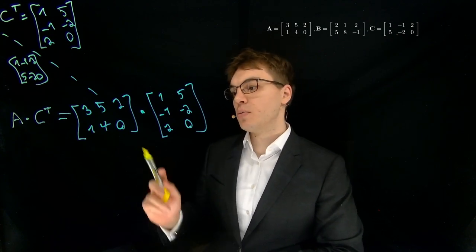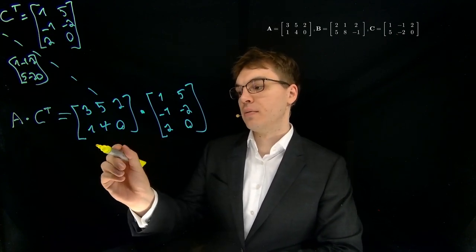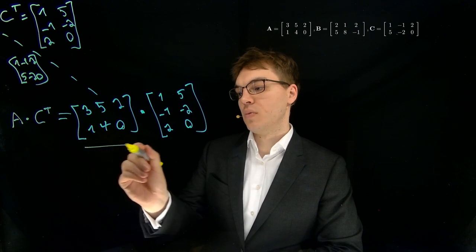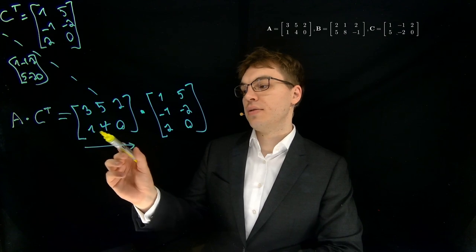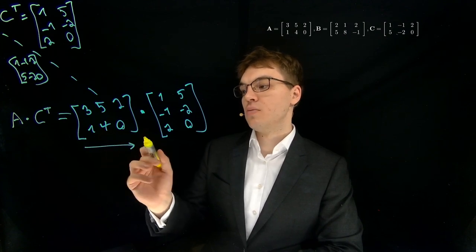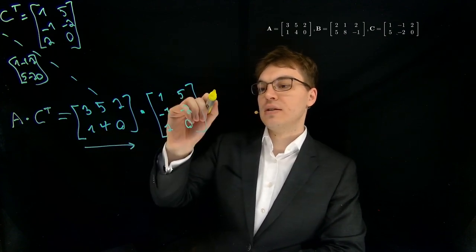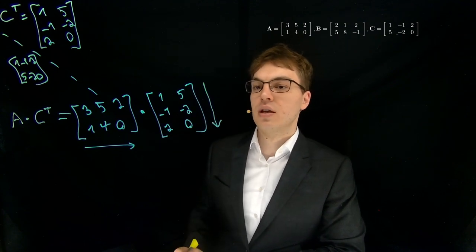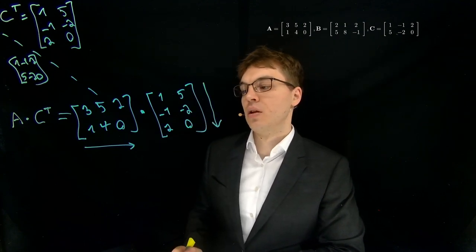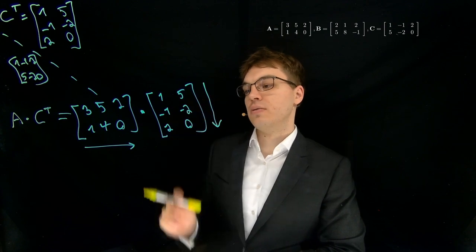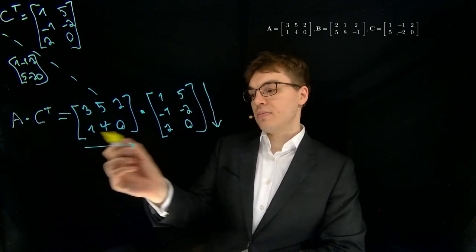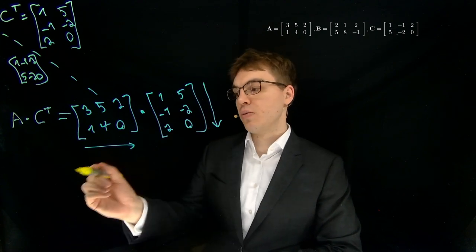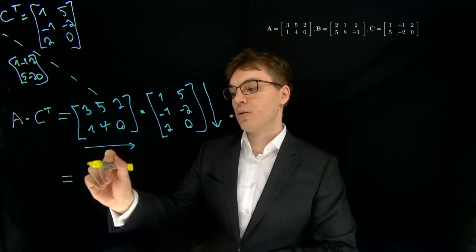Because for the dot product you need the following condition here. You need that the number of columns in the first matrix is identical to the number of rows in the second matrix. So this is the condition that you need to fulfill. And we can see that this is the case, this is both three here, so we can start the computation.